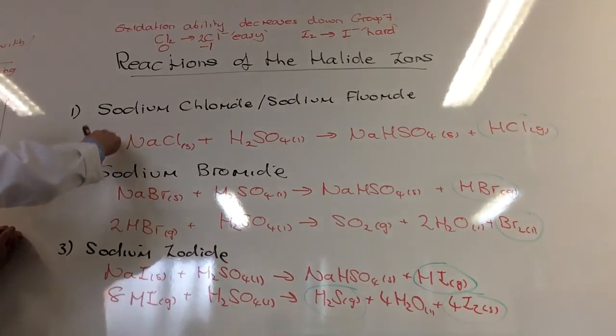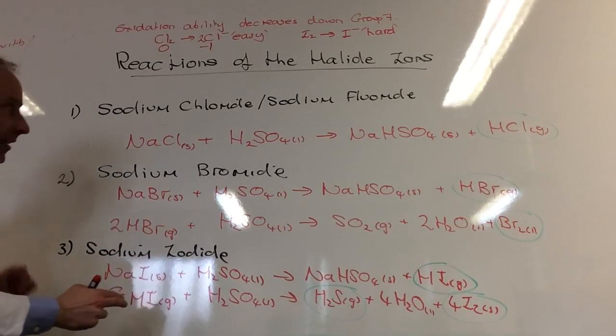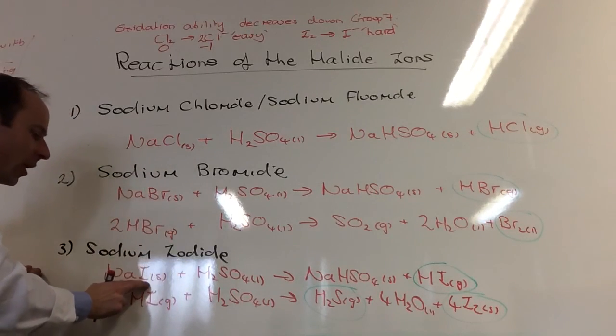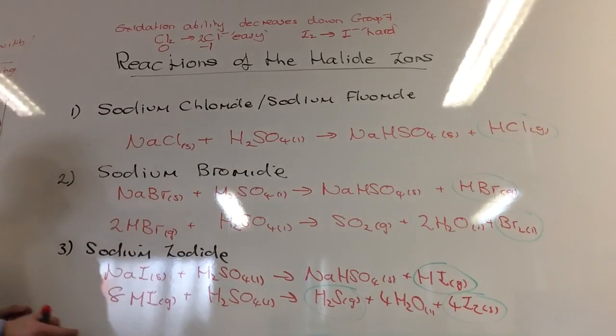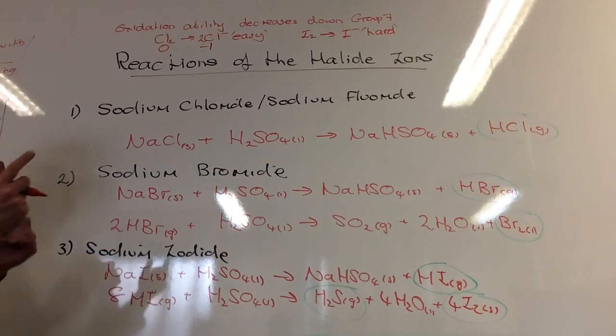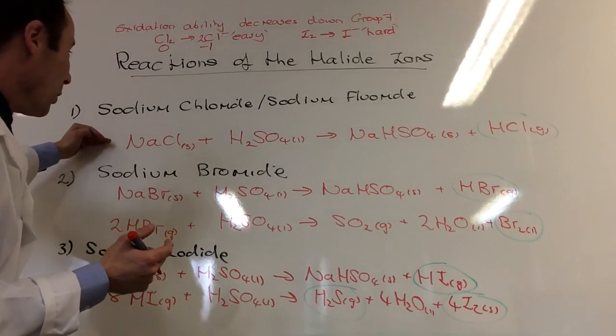So we're now starting with chloride ions, or bromide ions, or iodide ions, and we're reacting each one of these with sulfuric acid. And we're going to try and work out, first of all, what we're making, and why it works out this way.